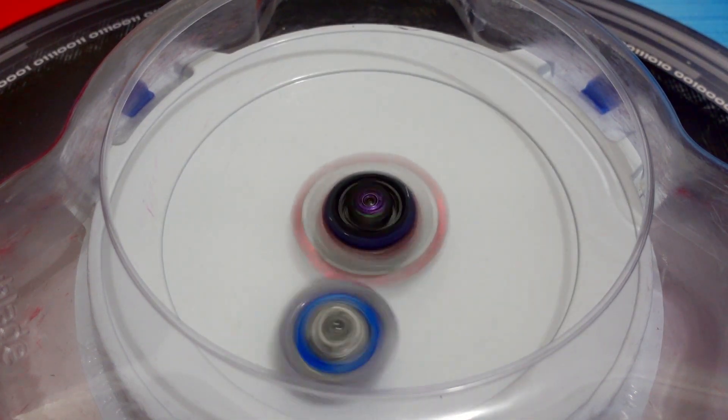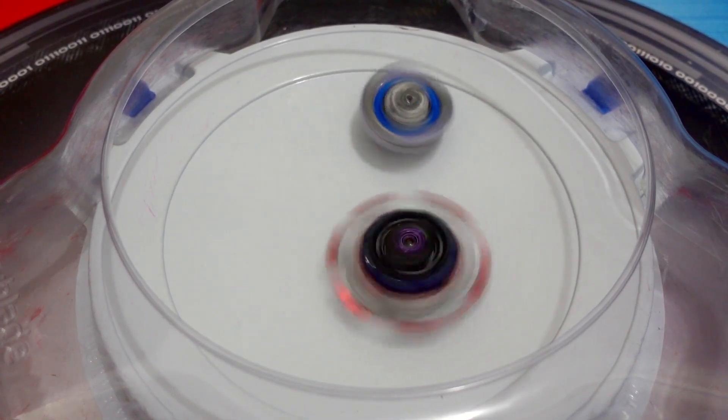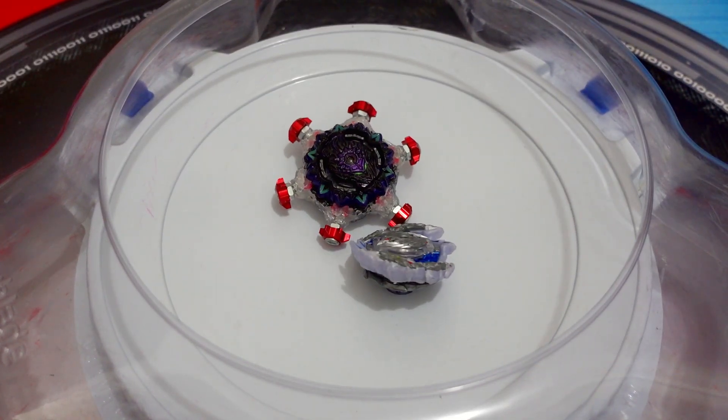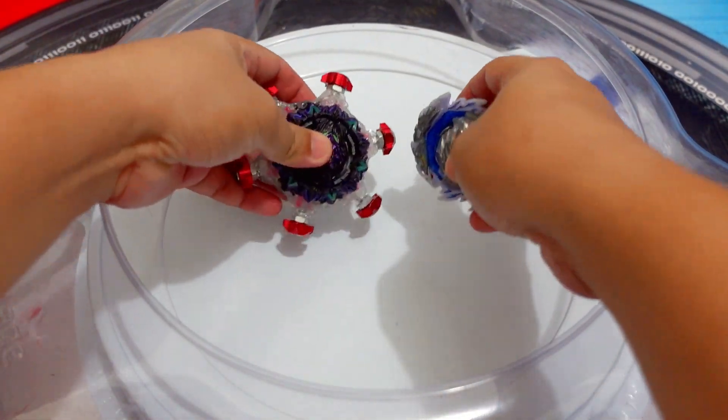Okay, so I think that's good because the Metal Barrier Variant Lucifer is losing a lot of stamina. Maybe the Guilty Longinus can win via survivor finish. Oh, I think it was a draw. So 6-0-1.